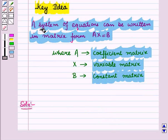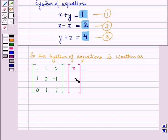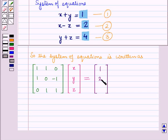From the key idea we know that a system of equations can be written in matrix form AX equals B, where A is the coefficient matrix, X is the variable matrix, and B is the constant matrix. So the system of equations is written as matrix A — with first row 1, 1, 0; second row 1, 0, minus 1; and third row 0, 1, 1 — multiplied by column matrix X with elements x, y, z, equals column matrix B with elements 1, 2, and 4. This is of the form AX equals B.